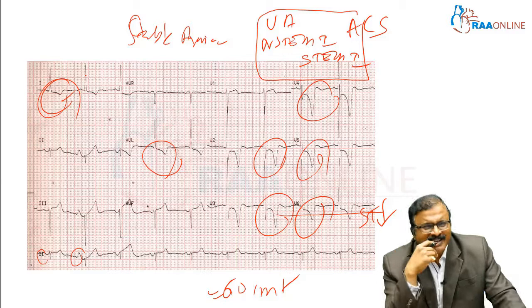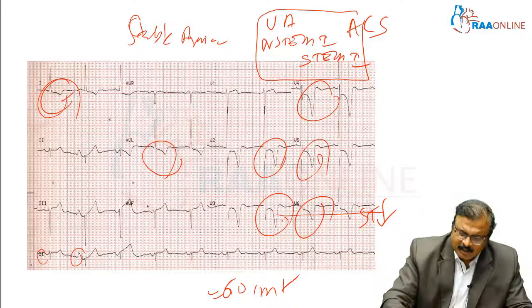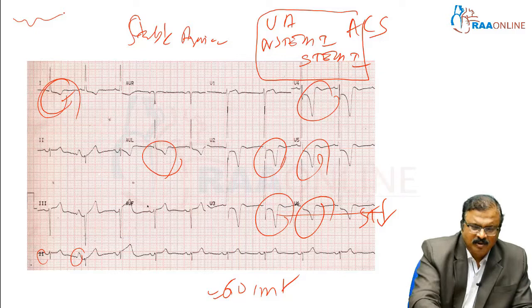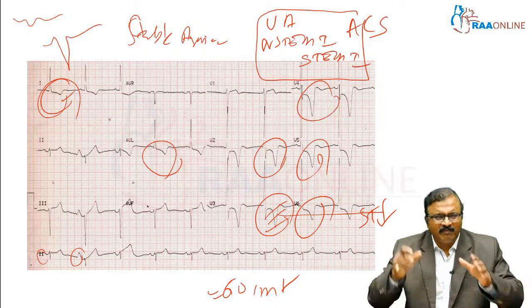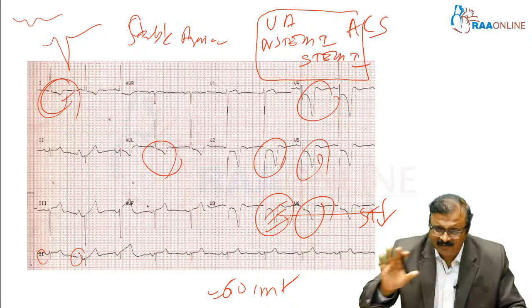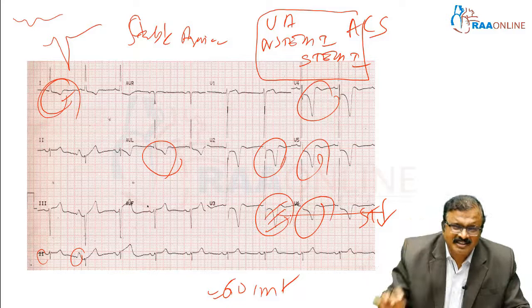The next important finding is comparing with lead AVL — you can see deep T inversions. T inversions can be mild or deep; here it is deep T inversion. When there is deep T inversion and ST segment depression, it is definitely not ST elevation MI — it is either unstable angina or NSTEMI.